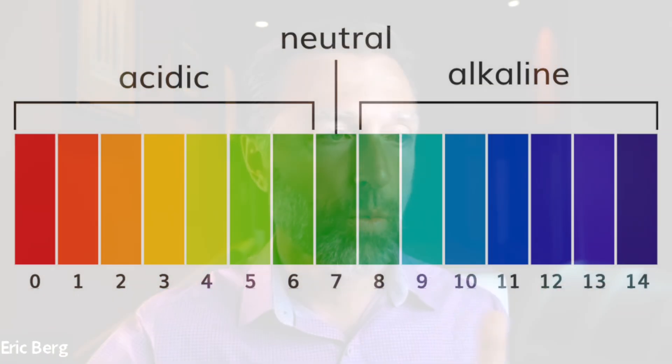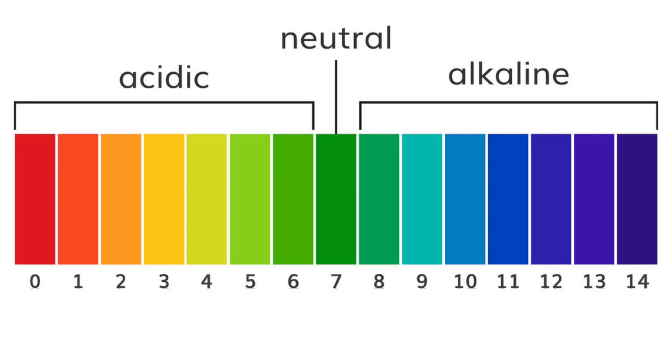Let's first talk about different things that you can drink that are acidic. When I talk about acidic, I'm talking about pH. The pH scale goes from 1 to 14 — 14 being extremely alkaline and 1 being extremely acid. Right in the middle, 7, you have something neutral. So the higher the pH above 7, the more alkaline it is, and the lower things are below 7, the more acidic they are.